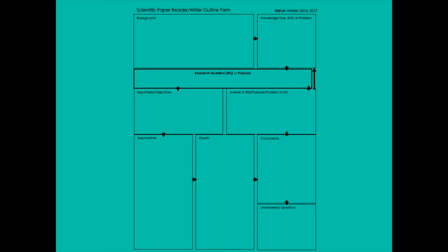Another way to present this information is on this form that you're seeing now. This is the scientific paper reader-writer outline form that I developed in 2014. I designed this form for people to use as they're reading scientific papers to capture the information on a one-page form, but you can also use it as you're writing scientific papers. It's a way to put your thoughts together in a logical sequence.